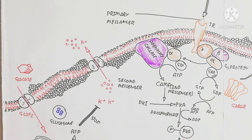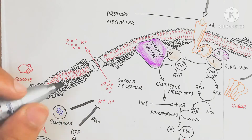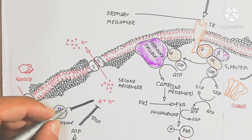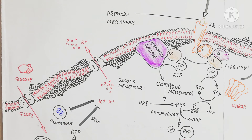Chloride ions move inside the alpha cell, causing an increase of negative charge and accumulation of negative charge inside. This inhibits glucagon production.